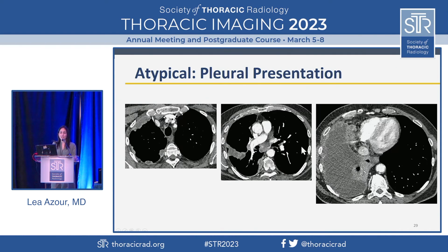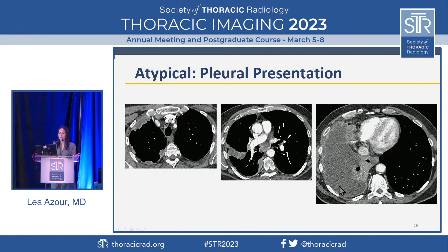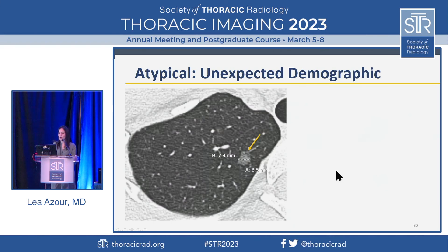Pleural presentation. Sometimes things are not mesothelioma — they're unilateral. This was lung adenocarcinoma with multiple necrotic pleural masses as the patient's initial presentation. Typical in that it's advanced stage, but atypical in that it's really primarily a pleural process.